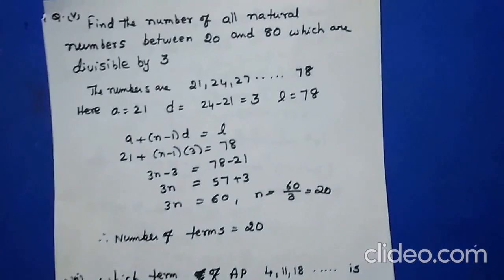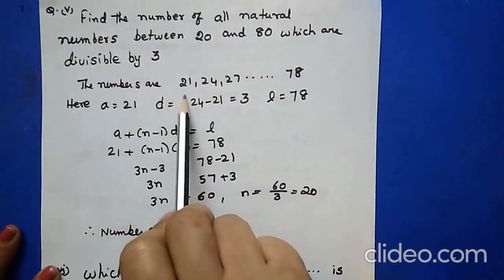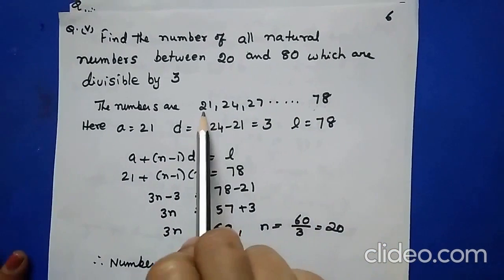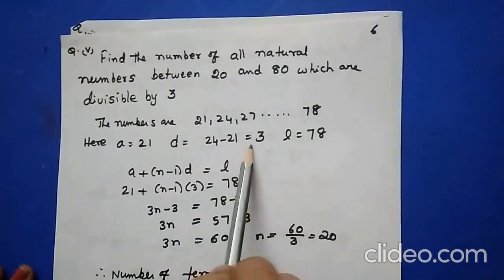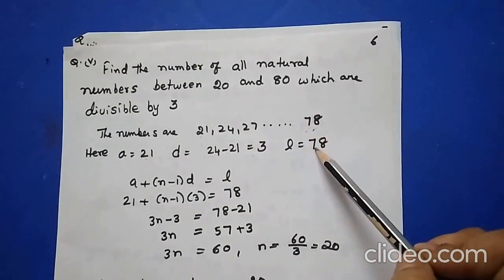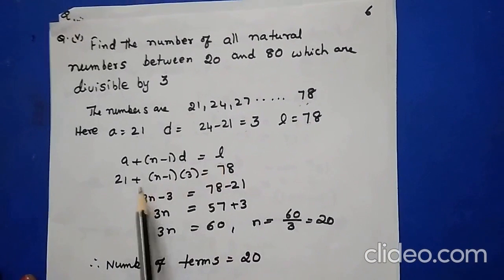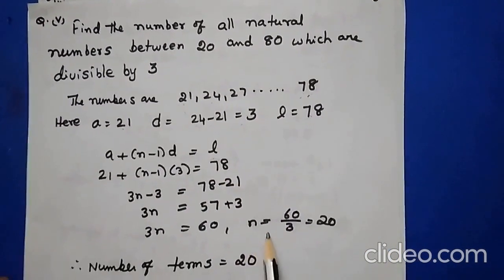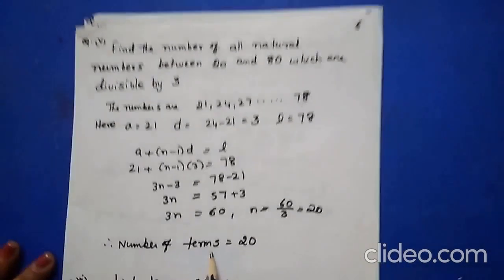Find the number of all natural numbers between 20 and 80 which are divisible by 3. The numbers are 21, 24, 27, ... up to 78. Here A=21, D=24-21=3, last term L=78. Applying A + (N-1) × D = L: 21 + (N-1) × 3 = 78, solving gives N = 60 ÷ 3 = 20. Therefore the total number of terms is 20.